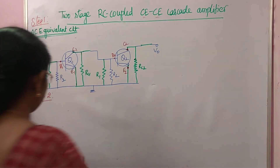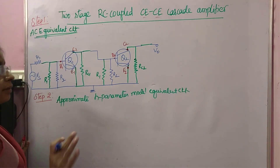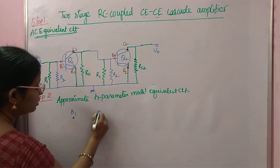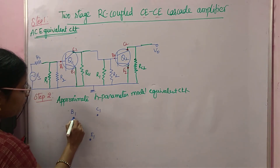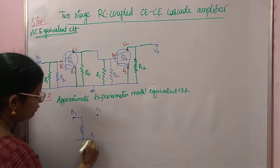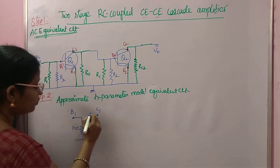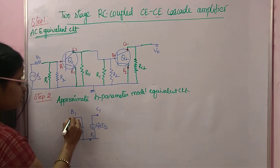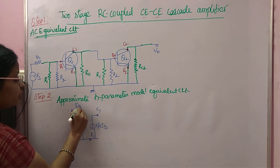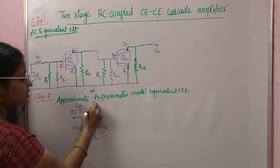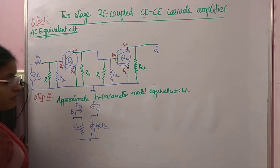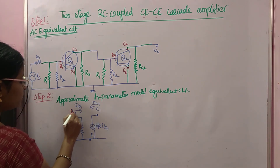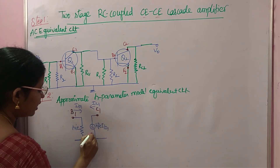So now I am drawing the equivalent circuit. For the first transistor, I am drawing its approximate H-parameter model. The terminals are B1, C1, and E1. I am indicating the base current IB1 and collector current IC1, so the current source is HFE·IB1.